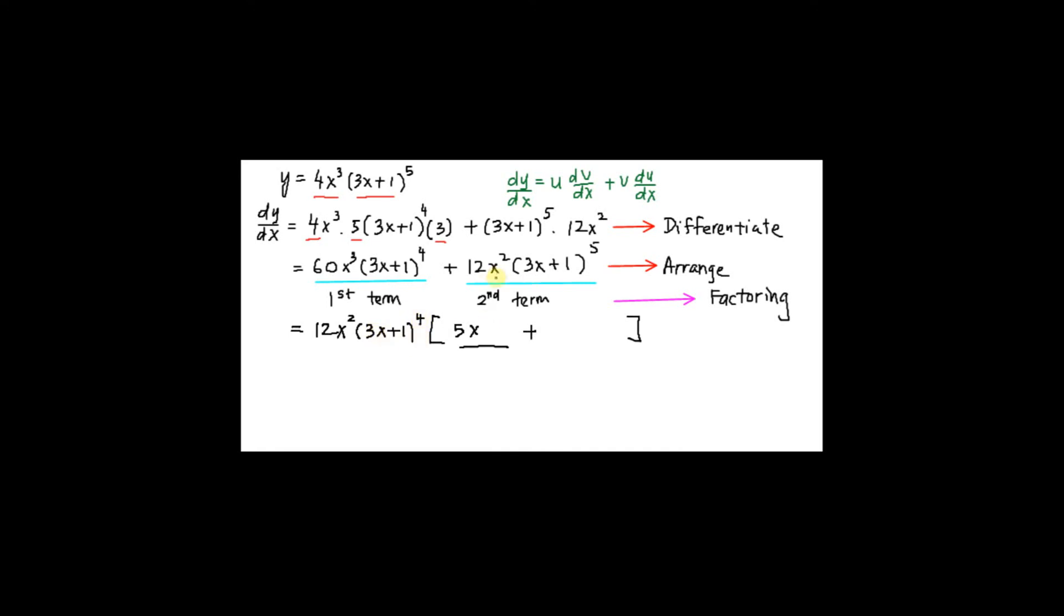The second term here, I need 12 already here and x squared here. 3x plus 1 power 4, I need another one of 3x plus 1 power 1 in order to get 3x plus 1 power 5.